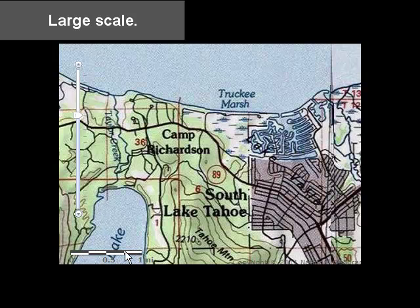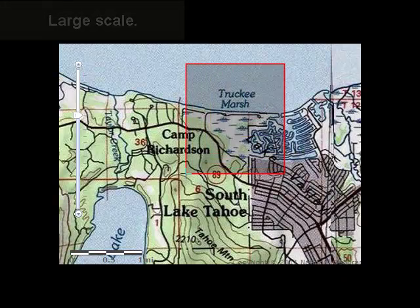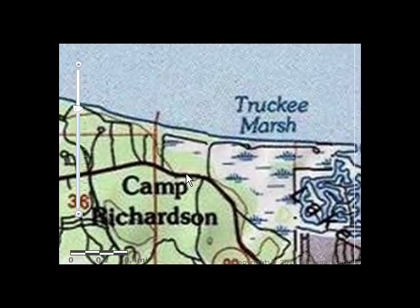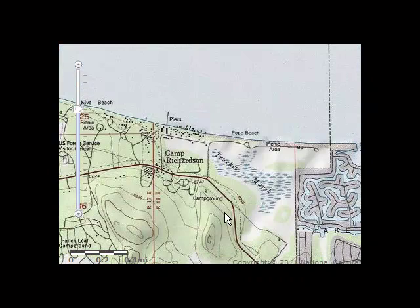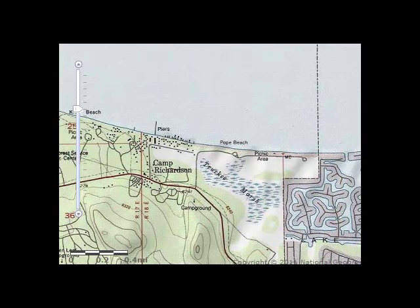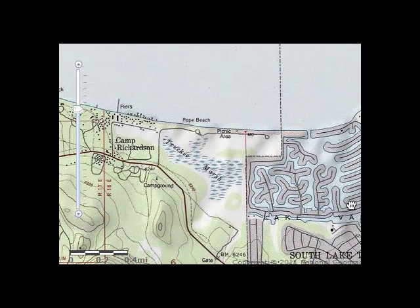Now, I've got a very large-scale map. I can see a great amount of detail, right down to the contour lines, as you can see right here, and the different features, such as the beach, the marsh, and some of the commercial and residential development occurring along the lake.